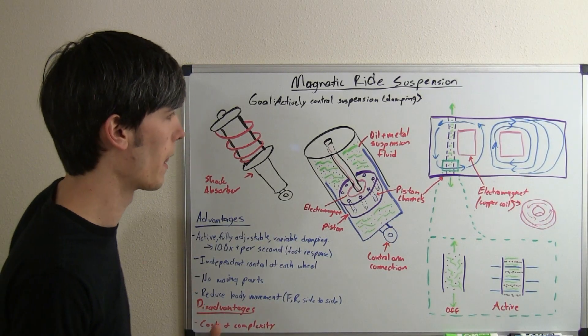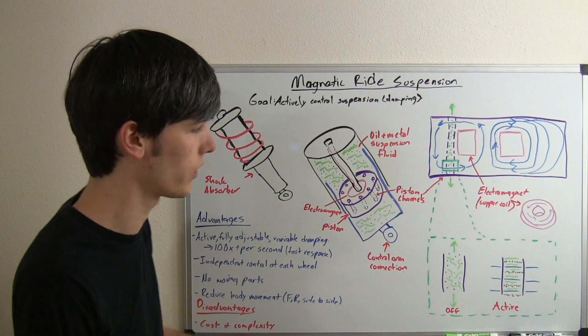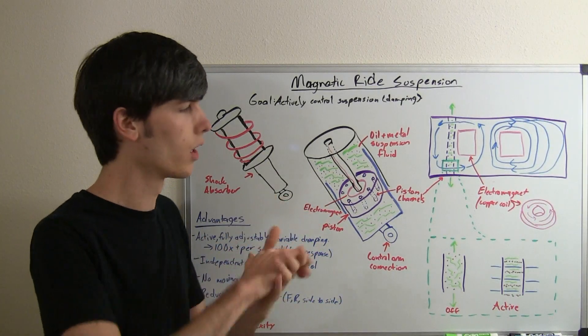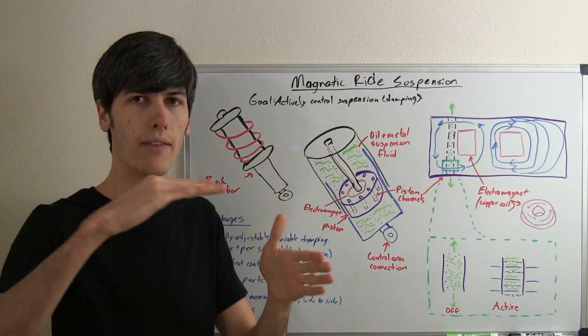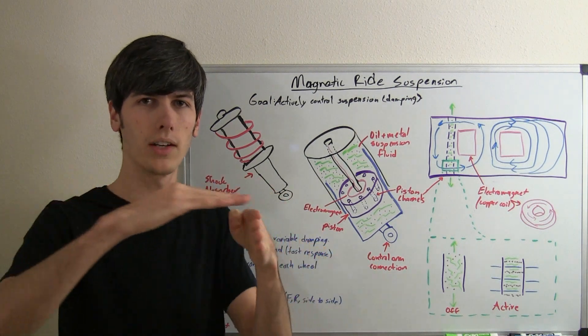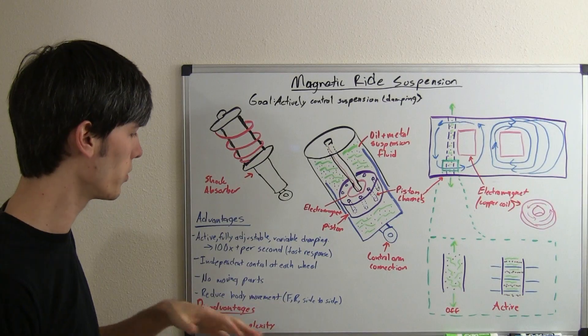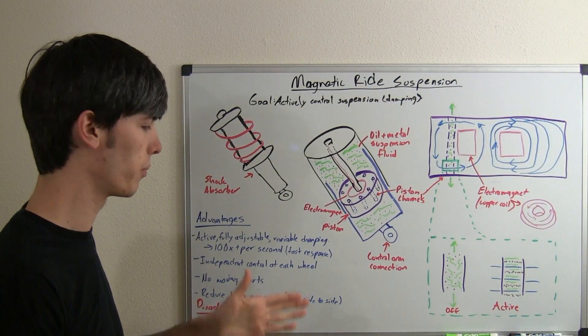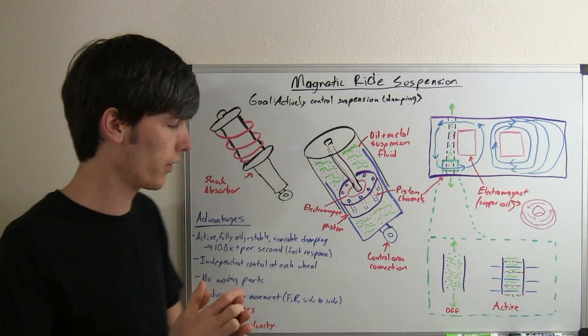And then also, you can reduce body movement. So, like I was saying, if you make it really stiff you can prevent the body from even rolling going around the corner. If it hits a bump, you can have it so it's soft and then firm as it comes back down so it basically doesn't even notice that it hits that bump. So, you can completely reduce body movement and keep the car as flat as possible.